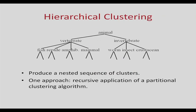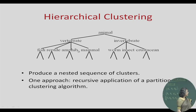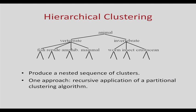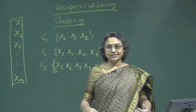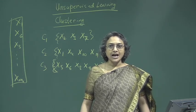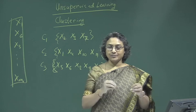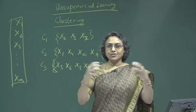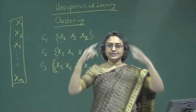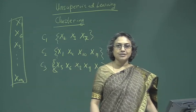The second type is hierarchical clustering. For example, animals may be grouped into vertebrates and invertebrates, and vertebrates broken into fish, reptiles, amphibians, mammals, and so on — this is an example of tree or hierarchical clustering. We will look at methods for hierarchical clustering which produce a nested sequence of clusters. You can recursively apply a partitional algorithm, or do bottom-up clustering where you start with each item in its own cluster and repeatedly merge clusters until you get one, producing a nested tree.